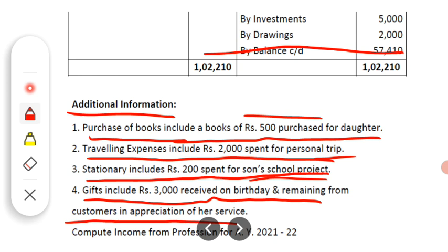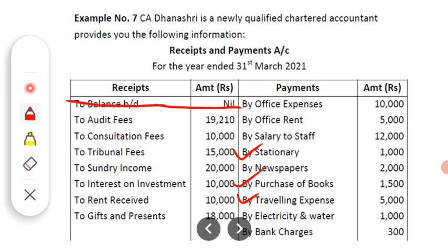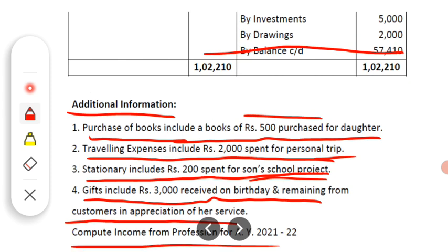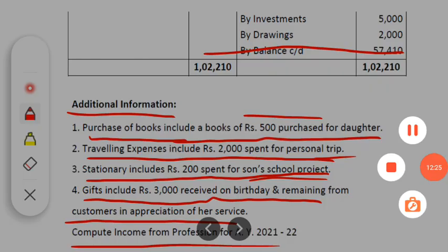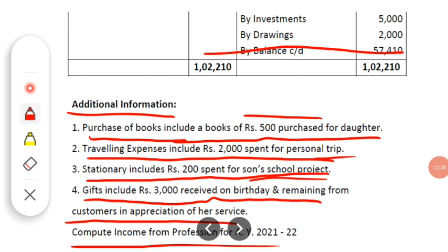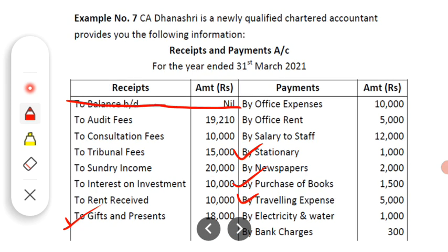For the fourth adjustment on gifts — out of the total gifts received, some gifts were received on a birthday which is personal, and the remaining gifts were received from customers in appreciation of her service. We are asked to compute income from profession for assessment year 2021-22 based on the receipt and payment account and adjustments given for CA Dhanashri.